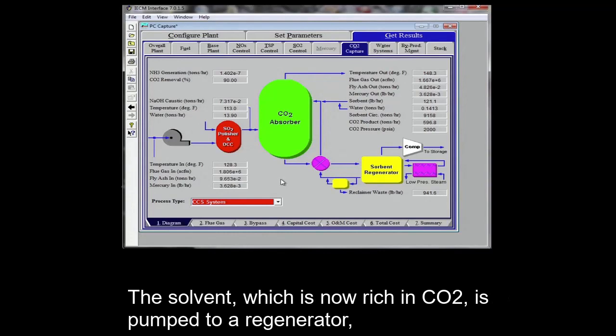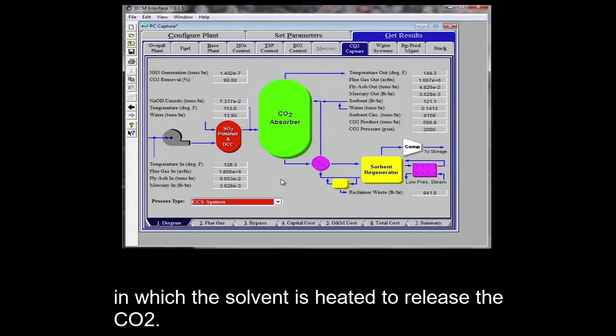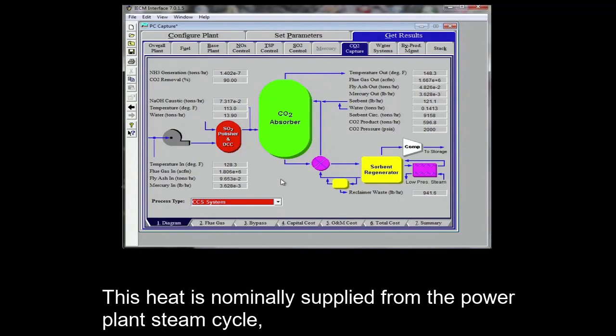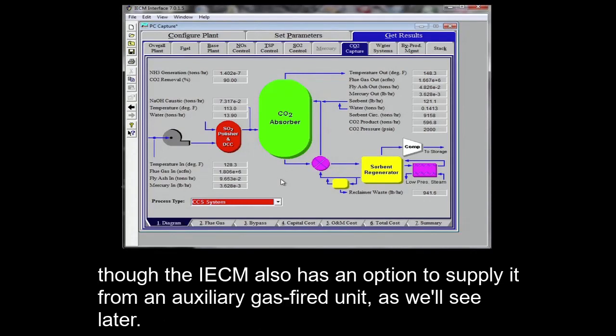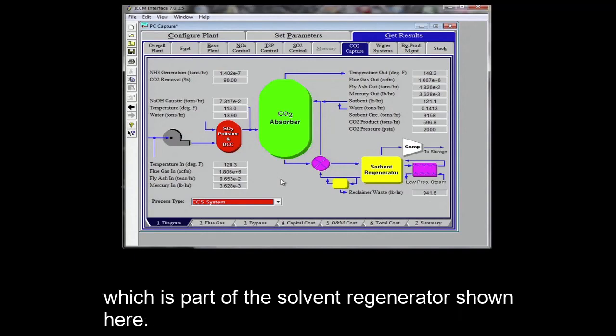The solvent, which is now rich in CO2, is pumped to a regenerator where the CO2 is released in a temperature swing process in which the solvent is heated to release the CO2. This heat is nominally supplied from the power plant steam cycle, though the IECM also has an option to supply it from an auxiliary gas-fired unit, as we'll see later. That heat is transferred to the solvent via a heat exchanger, also known as a reboiler, which is part of the solvent regenerator shown here.